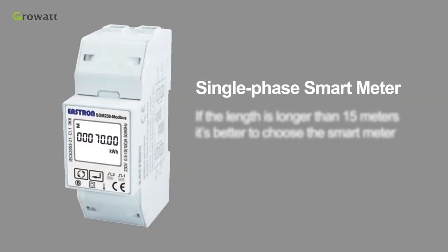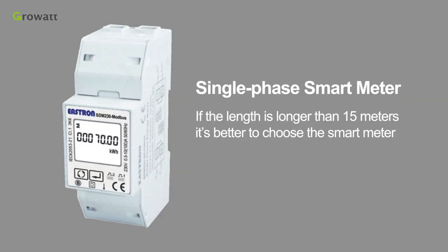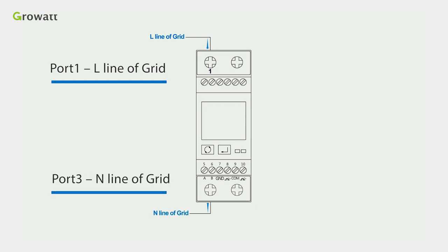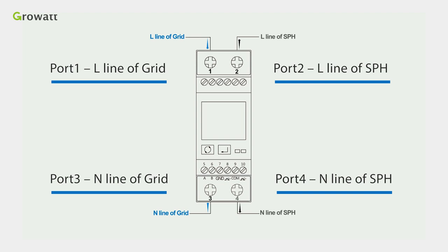If the length is longer than 15 meters, it's better to choose the smart meter. Firstly, connect the port 1 to the L line of grid, port 3 to the N line of grid, port 2 to L line of SPH, and port 4 to N line of SPH.